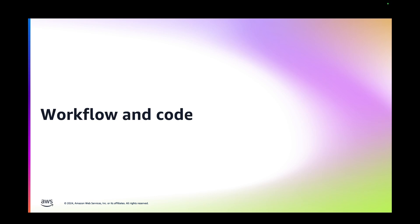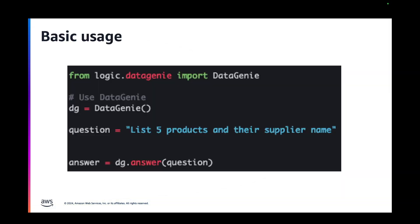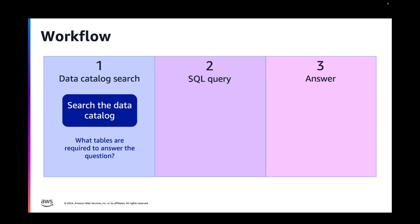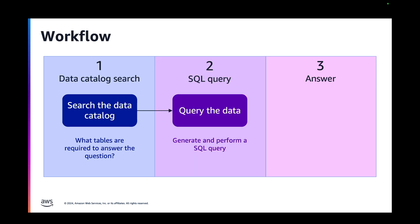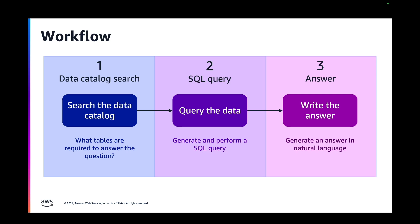Let's talk now about the workflow and how it is implemented in the code. The basic usage is just instantiating the DataGenie class and asking your question — very simple. The workflow is in three steps. The first step is the data catalog search, where we find the tables required to answer the user question. The second step is the generation of a SQL query and performing that query. The third step is to generate an answer in natural language.